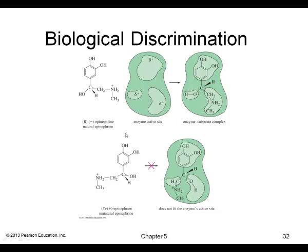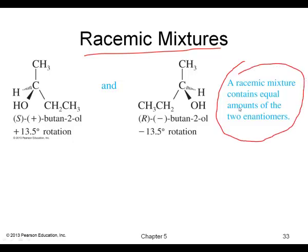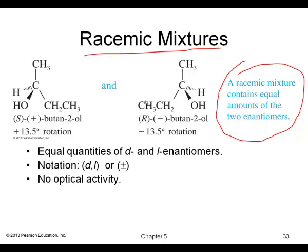In biological discrimination, your body can discriminate between enantiomers. For example, with epinephrine, your body can use the R enantiomer but does not recognize the S enantiomer. A racemic mixture contains equal amounts of two enantiomers — for example, a 50-50 mixture of S- and R-2-butanol. The important result is that enantiomers cancel each other's optical activity, giving an alpha value of zero for a racemic mixture.